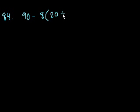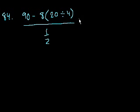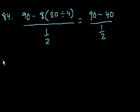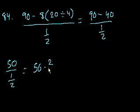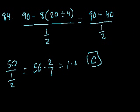Next question, 84. 90 minus 8 times 20 divided by 4, all of that over 1/2. This is just a fast simplification problem. That becomes 90 minus - what's 20 divided by 4? 20 divided by 4 is 5. 5 times 8 is 40. All of that over 1/2. That becomes 50 over 1/2, which is the same thing as 50 times 2 over 1, which equals 100. That's choice C. That's just one you have to do quickly and not make a careless mistake.